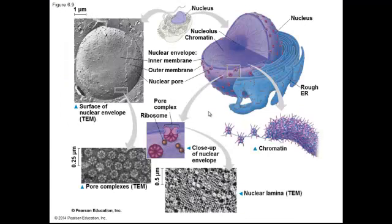If we look at the diagram here, we can see the two layers in the membrane. In a magnified version, we can see there are two layers of the membrane. Notice that there are little pores in the nucleus made up of proteins that allow the passage of substances in and out of the nucleus in a fairly easy fashion.